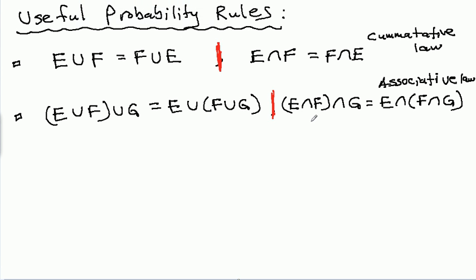So, E and F and G is equal to E and F and G, or I could say intersect or and. I can move the order I do these around. And you could already see that if I combine the cumulative law and the associative law, I can arrive at some interesting understandings here.